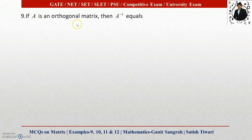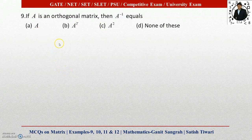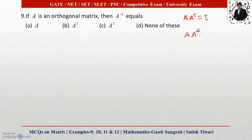Example number 9: If A is an orthogonal matrix, then A inverse equals what? We are given 4 options: A, A transpose, A squared, and none of these. For this you should know the definition of the orthogonal matrix. Matrix A is said to be orthogonal if A multiplied by A transpose equals I. We also know by the definition of the inverse of a matrix that A multiplied by A inverse equals I.